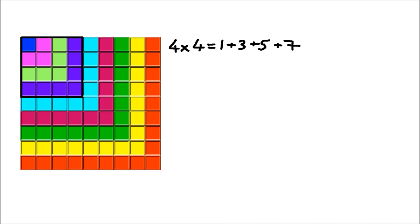And you can see that a 4 by 4 square is represented by 1 plus 3 plus 5 plus 7, and so on. To get 5 by 5, or 5 times 5, I would need to add 9 on to the previous number. So each time I'm adding on the next odd number.